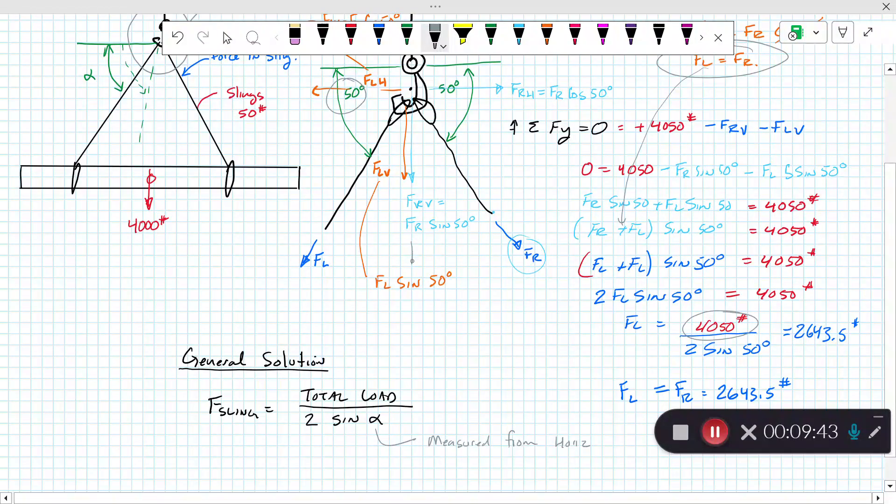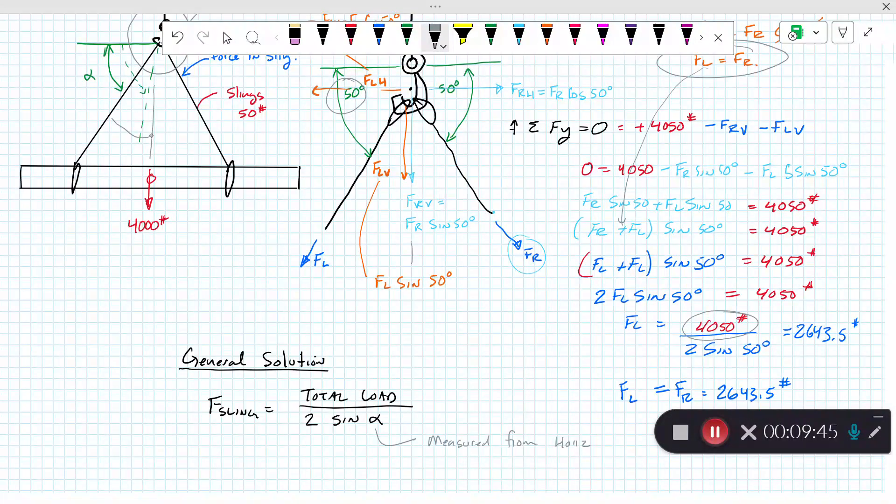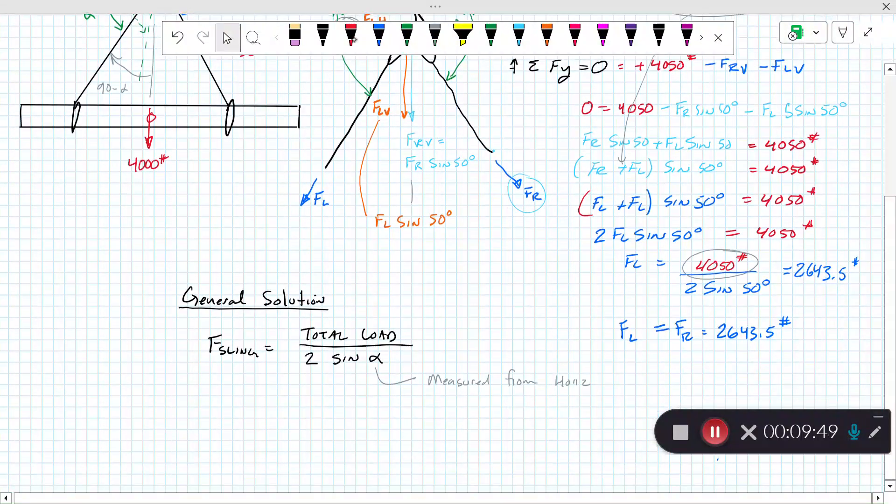If the angle was given measured from the vertical, this would be 90 minus alpha. And there is our solution.